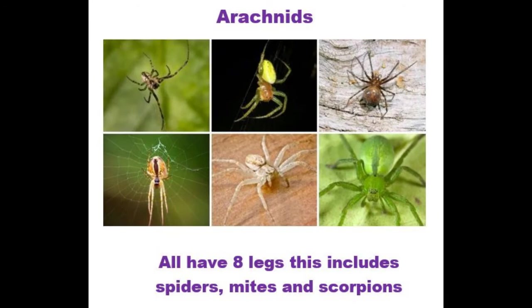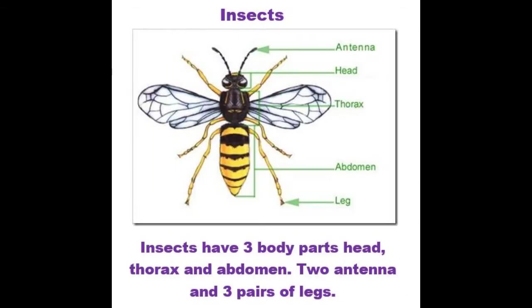The last two types of invertebrates often get confused with each other: arachnids and insects. The difference between these two is that arachnids have eight legs — so this includes spiders, but it also includes mites and scorpions. Insects, on the other hand, are six-legged animals and they have three distinct body parts. They have a head, a thorax and an abdomen, which you can see labelled on the picture. Insects also always have two antennae, which are also labelled.